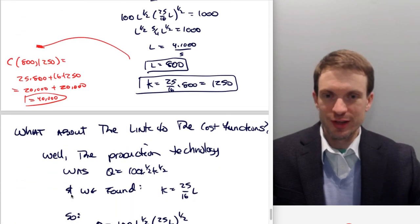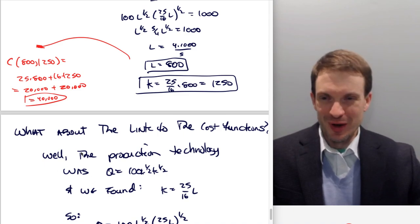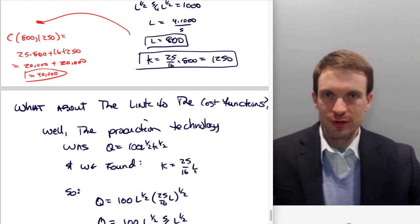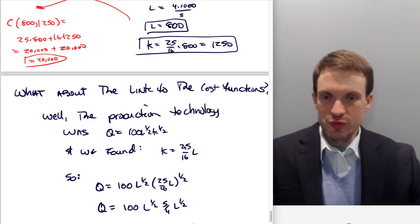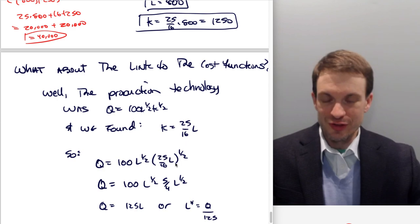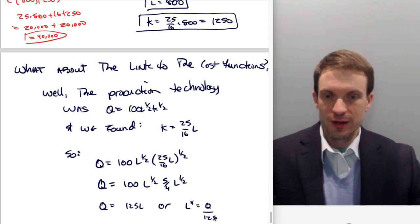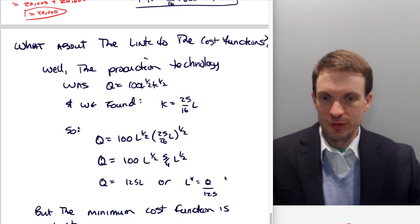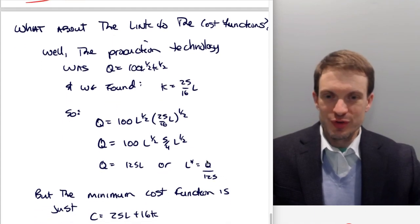So now you're thinking, cool, but what about the link to cost functions? Well, we have the production technology Q equals 100 times square root of L times square root of K. And we had already found K equals 25 over 16 times L. So let's just replace this into the production technology and solve for L. Square root of 25, square root of 16 is just 5 fourths. This times this is just L. So I have 125 L equals Q, or L star equals Q over 125.